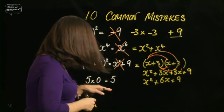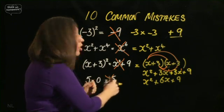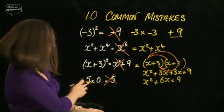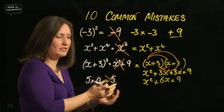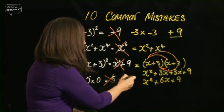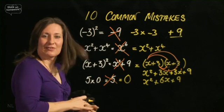And the last one. 5 times nothing is 5. Again, wrong. Why? Because if you have nothing in your hand, no sweets, and I say you can have 5 times as many, well, you're still going to have nothing, aren't you? So anything times nothing is nothing. And there you go. The first 4 done. Let's have a look at some more.